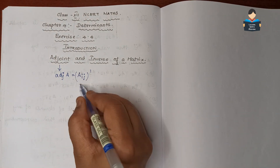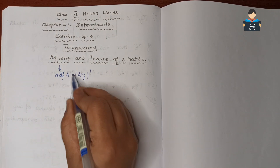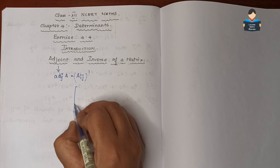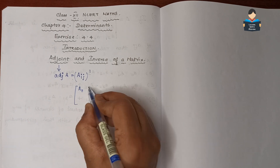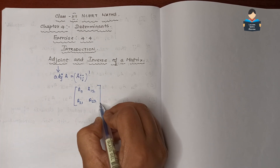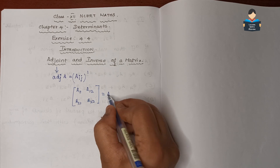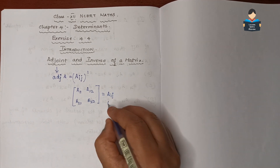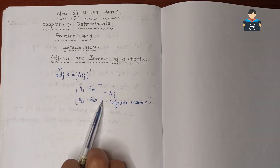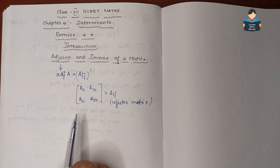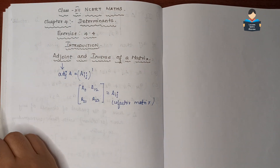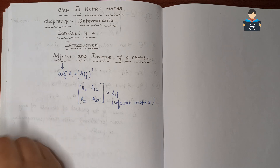This is a cofactor. For matrix A, we find out all the cofactors. So a11, a12, a21, a22 — we find out aij. This is what we call the cofactor matrix. For a normal matrix, we find out the elements using small letters and represent them.